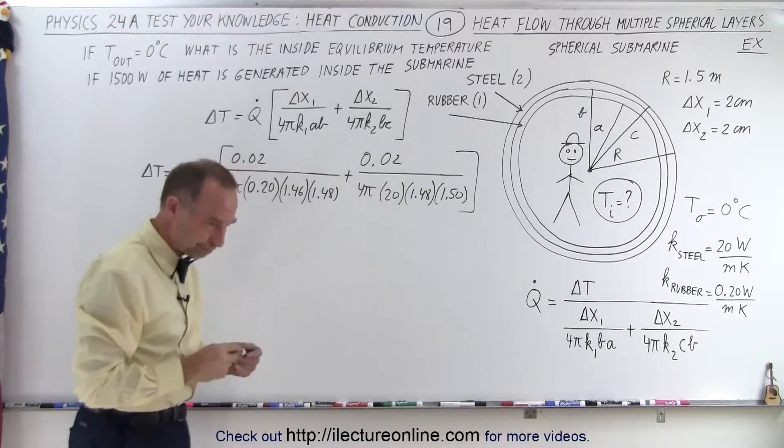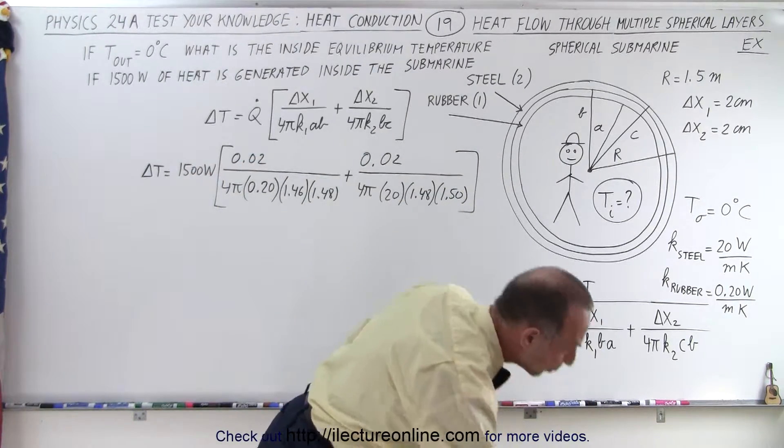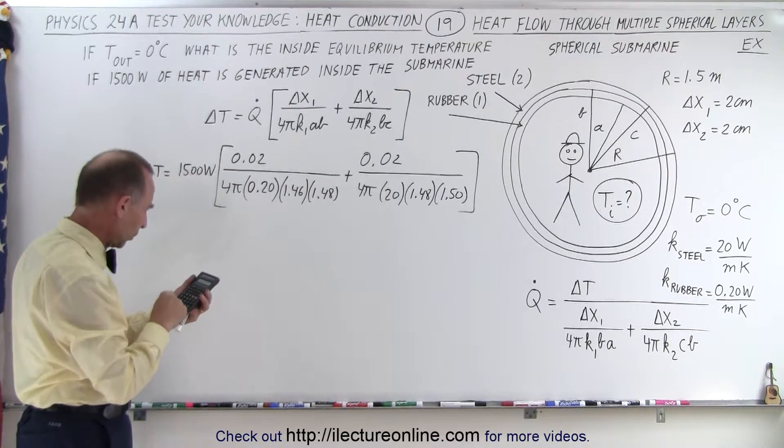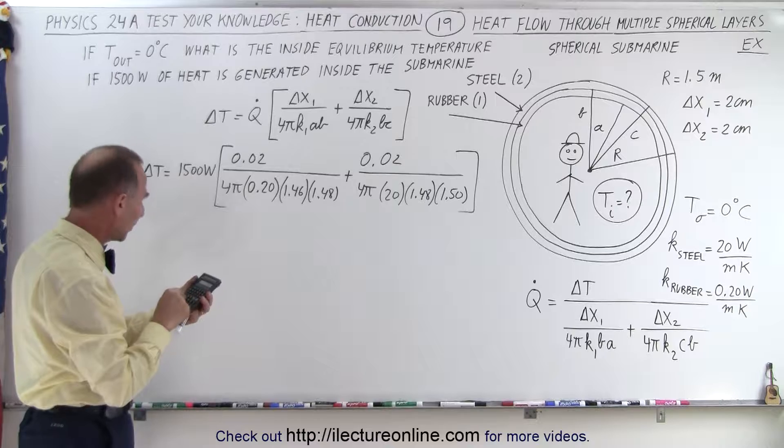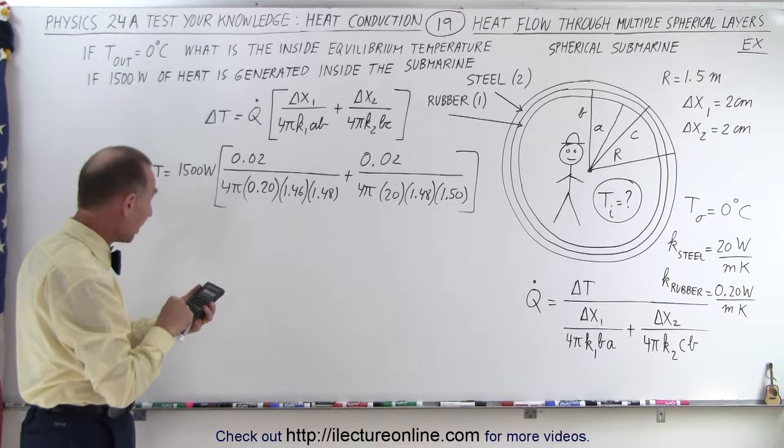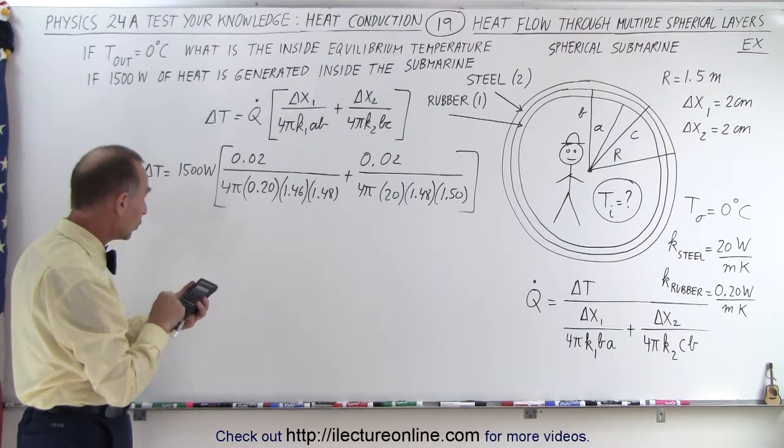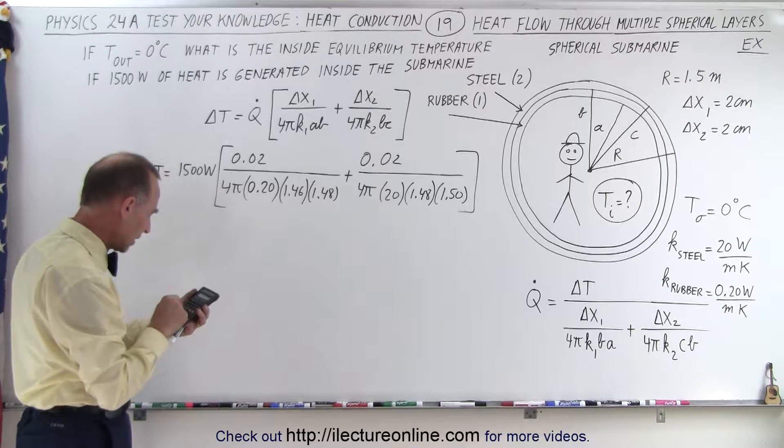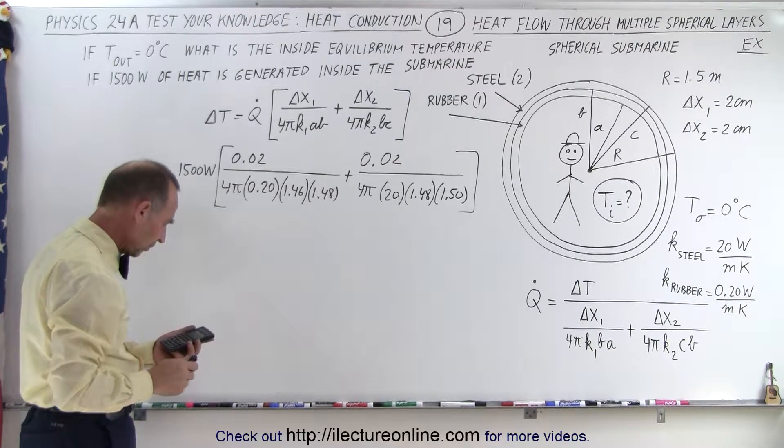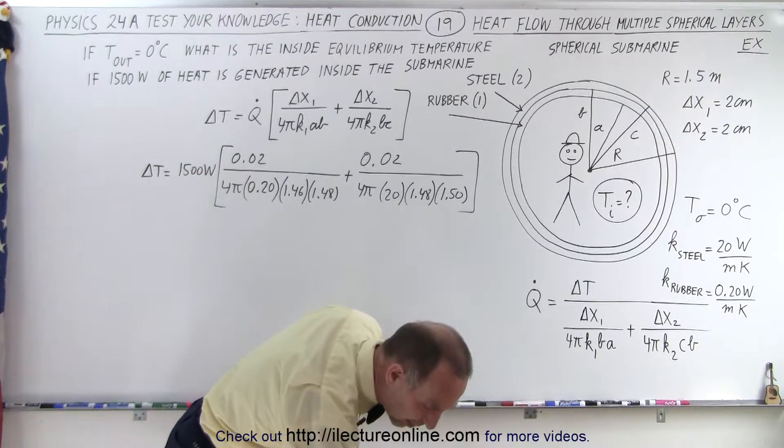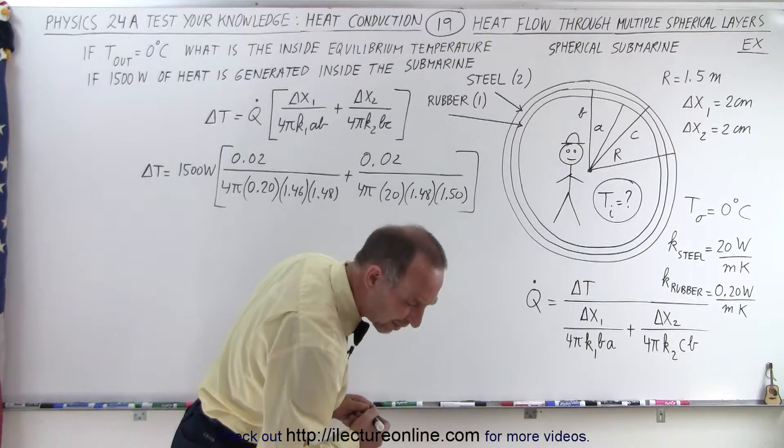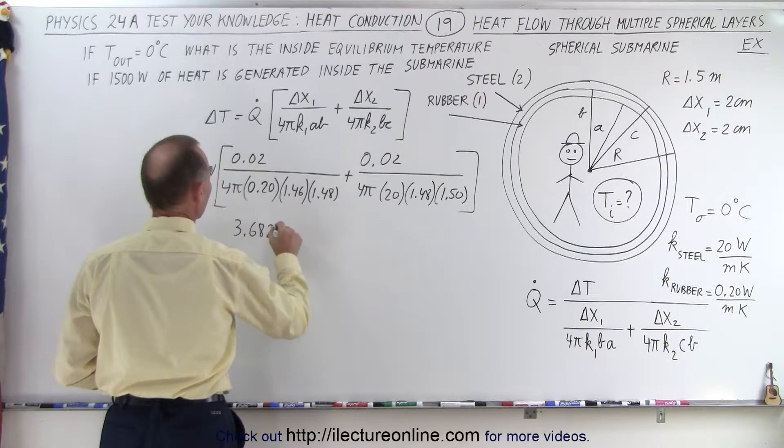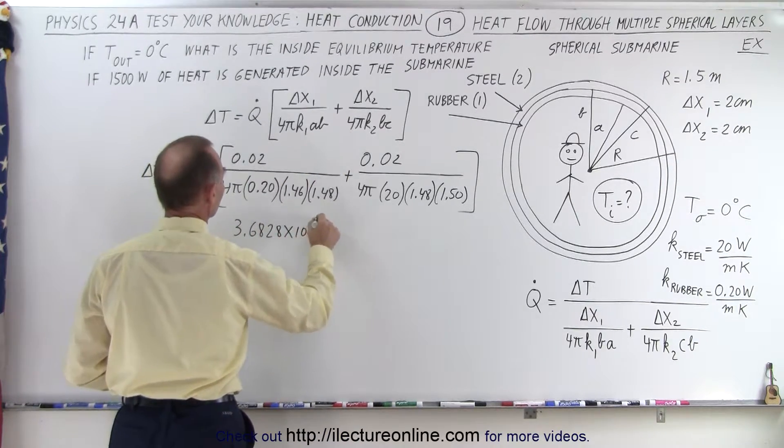All right, so what will this be equal to? So let's calculate this first. So we have 0.02 divided by 4, divided by pi, divided by 0.2, divided by 1.46, and divided by 1.48, equals 3.6828 times 10 to the minus 3, 3.6828. 3.6828 times 10 to the minus 3.